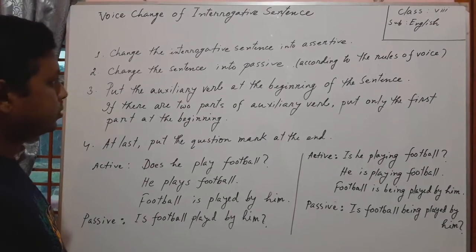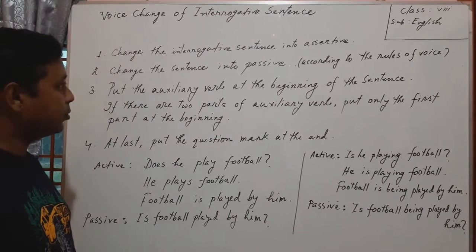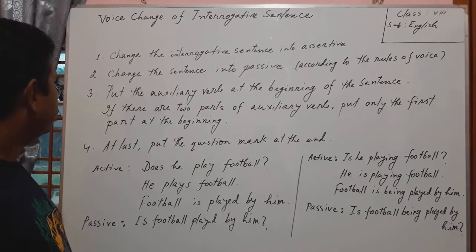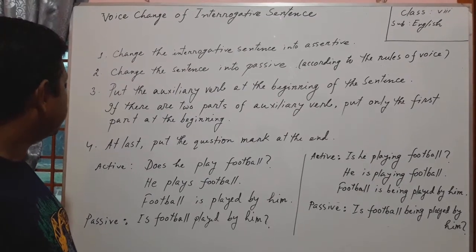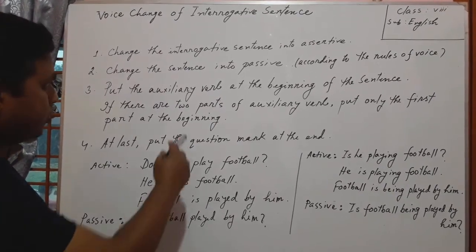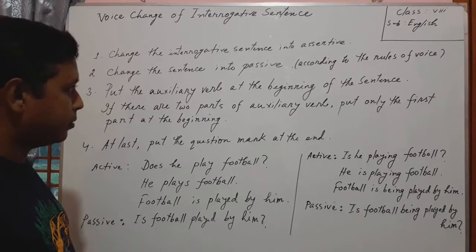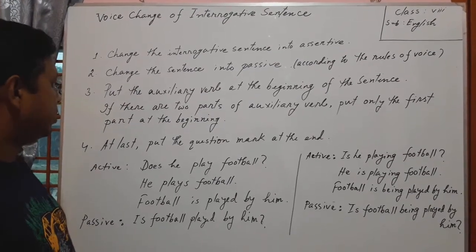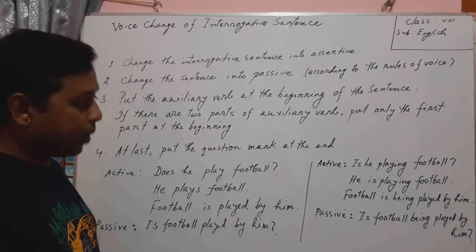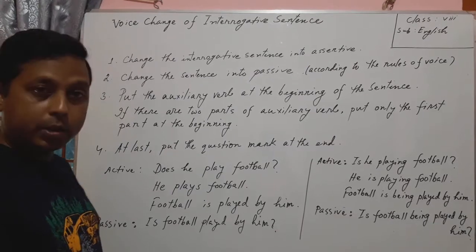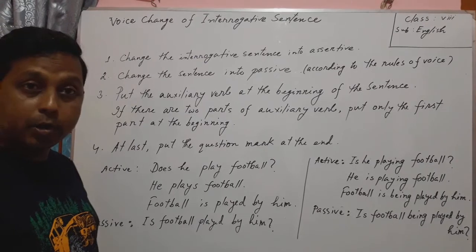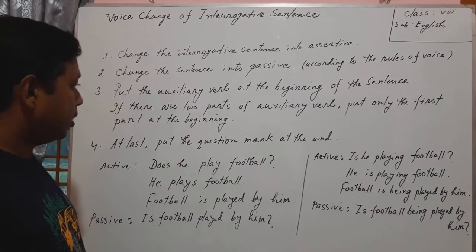You know that at the time of voice change we use an auxiliary verb. In the third step, we have to put the auxiliary verb at the beginning of the sentence. If there are two parts of the auxiliary verb, put only the first part at the beginning. We will notice that there will be two parts of the auxiliary verb, and if so, we will put only the first part at the beginning.